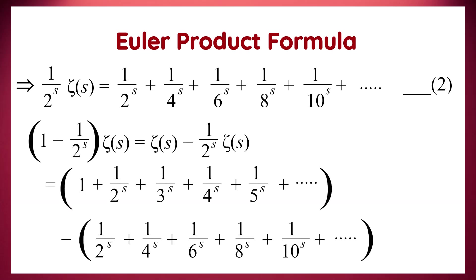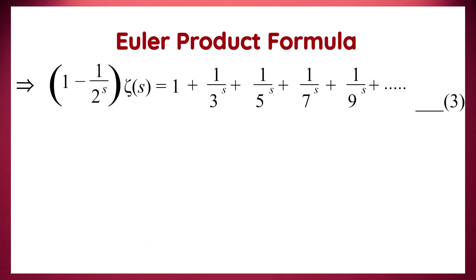Next, we find 1 minus 1 over 2 to the power s, times zeta(s), which is done by subtracting the second equation from zeta(s) as mentioned in equation 1. As we can see, the terms containing even numbers in the denominator get cancelled out. Therefore, we have: (1 minus 1 over 2 to the power s) times zeta(s) equals 1 plus 1 over 3 to the power s, plus 1 over 5 to the power s, plus 1 over 7 to the power s, plus 1 over 9 to the power s, and so on.